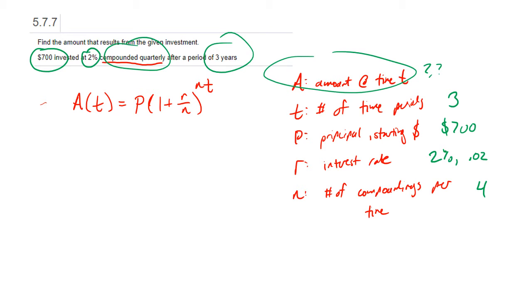Now we just have to plug everything into the formula and we get A of 3 equals 700 times 1 plus 0.02 over 4, all raised to the 4 times 3. So if I just pull out a calculator, we end up with 700 times parenthesis 1 plus 0.02 over 4, closed parenthesis raised to the 12th, $743.17.